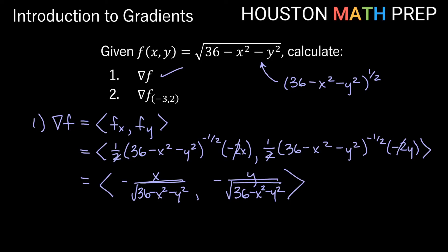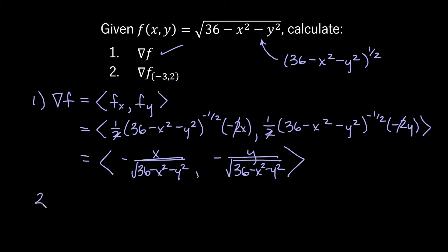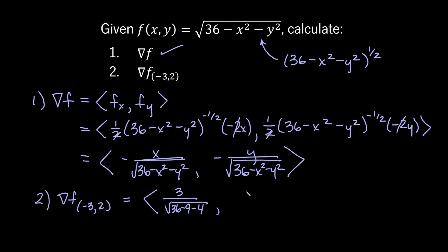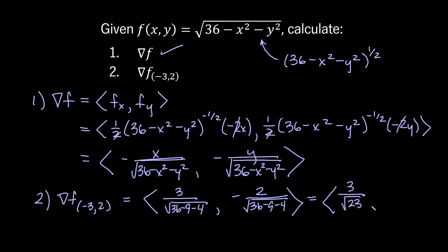Now we evaluate at the point (-3, 2). Plugging in: -x becomes -(-3) = 3 in the numerator. The denominator is √(36 - (-3)² - 2²) = √(36 - 9 - 4) = √23. For the y-component: -y = -2, over √23. So del f at (-3, 2) = (3/√23, -2/√23).